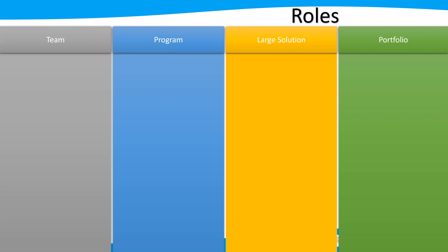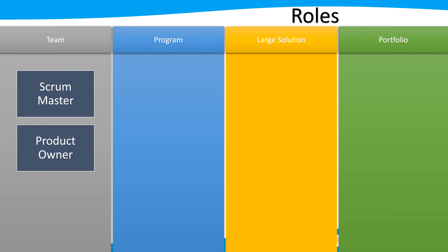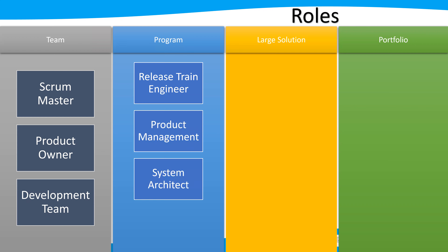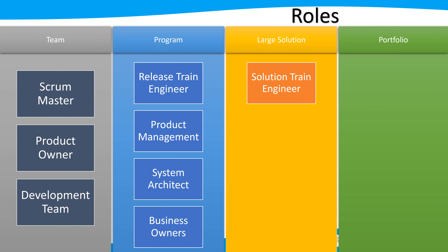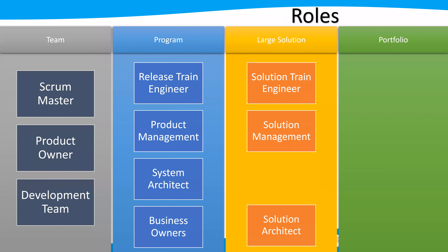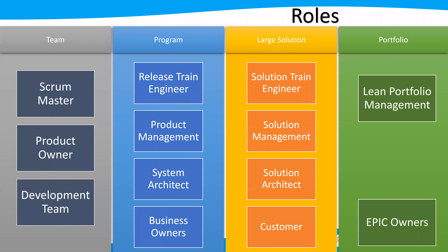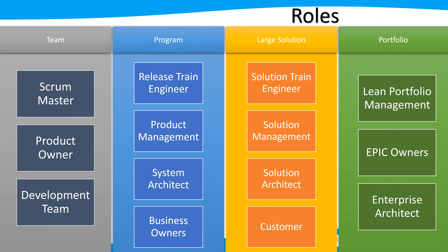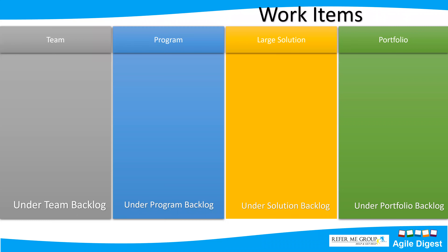The roles we have: at the team level — Scrum Master, Product Owner, and development team members; at the program level — Release Train Engineer, Product Manager, System Architect, and Business Owner; at the large solution level — Solution Train Engineer, Solution Management, Solution Architect, and Customer; and at the portfolio level — Lean Portfolio Management, Epic Owner, and Enterprise Architect.